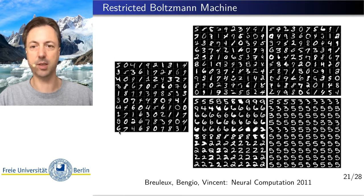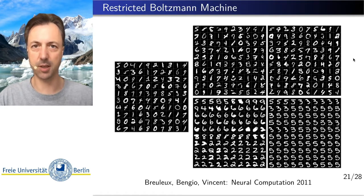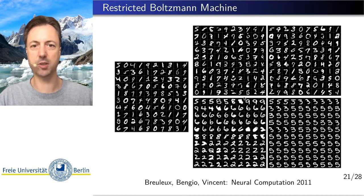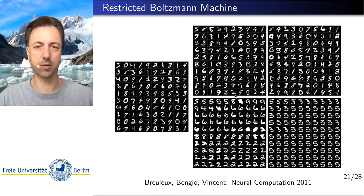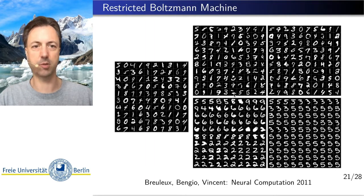On the left here we see actual samples from the MNIST data set. On the top you see different samples generated by the restricted Boltzmann machine. You can see that most of these samples indeed look like digits, but some do not or some have errors.